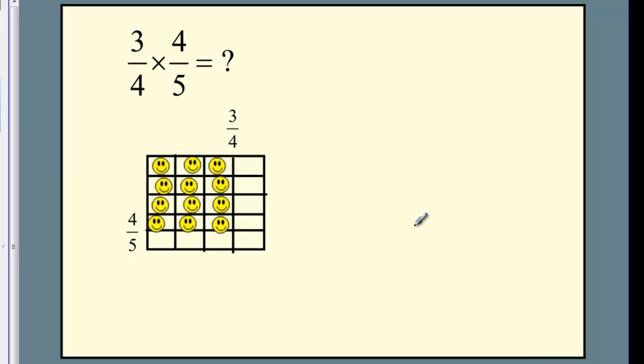How many blocks in all do we have? I think you'll see there are twenty blocks in all. So the answer must be twelve-twentieths. But let's not stop there. After all we've been practicing finding equivalent fractions. What if I move three of the smileys from the bottom row up to this column?